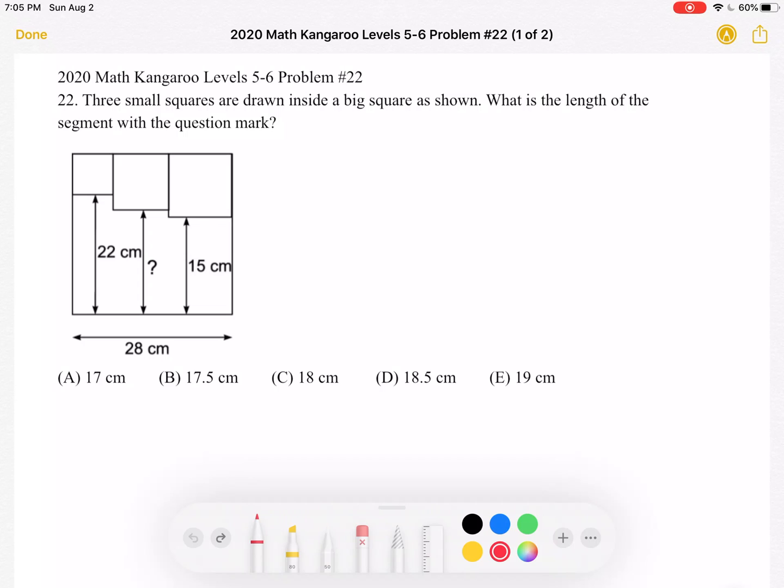A. 17 cm, B. 17.5 cm, C. 18 cm, D. 18.5 cm, or E. 19 cm. This is the problem as it originally appeared on the test.